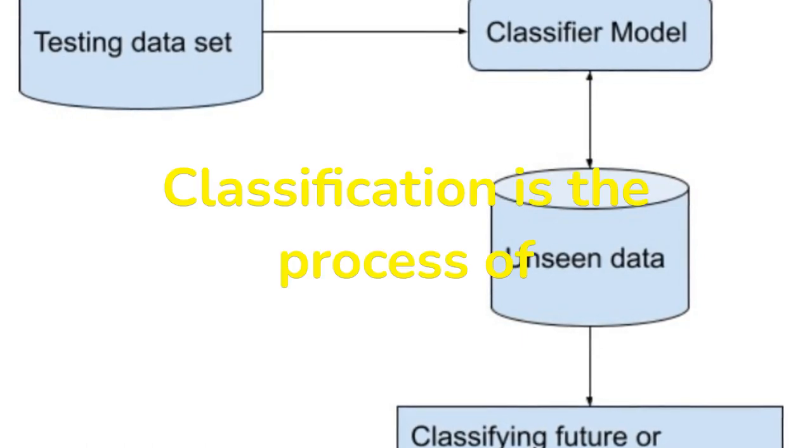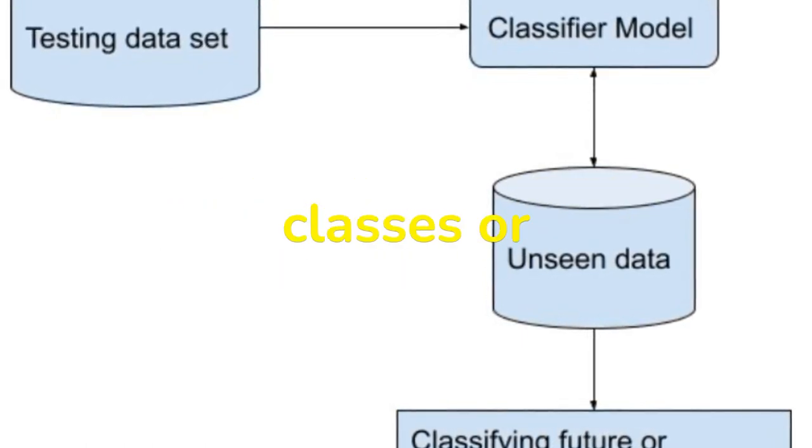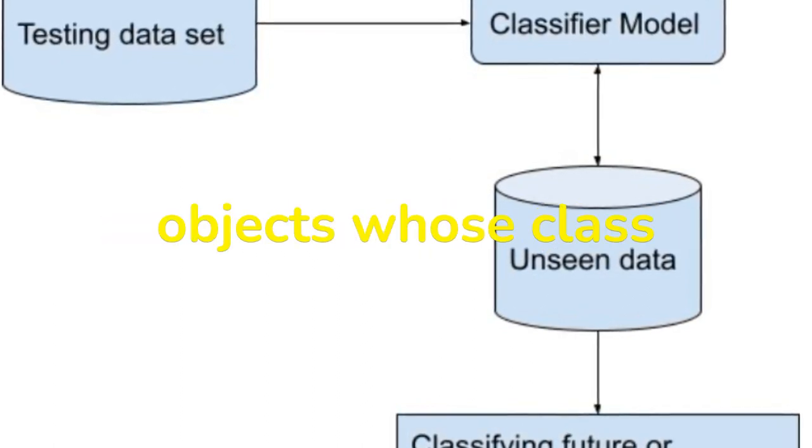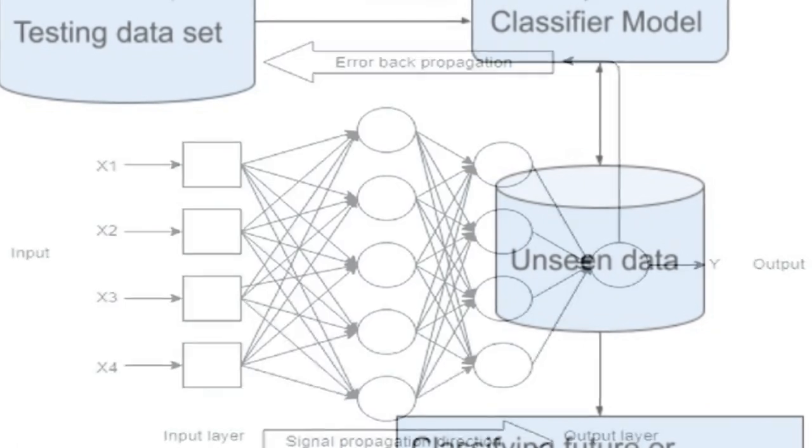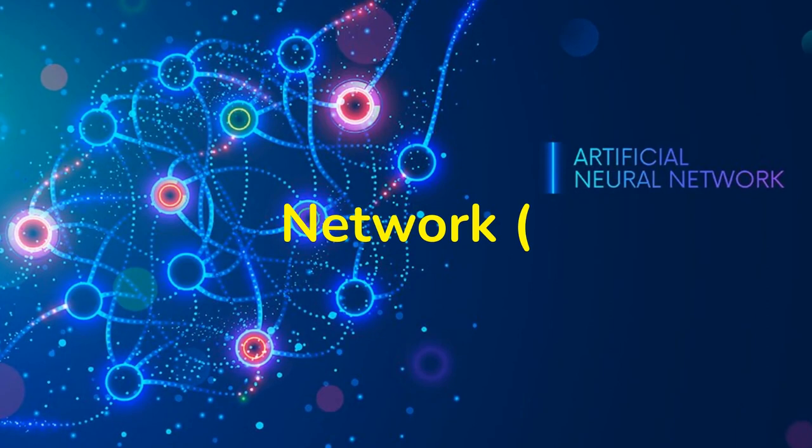Classification. Classification is the process of finding a model that describes and distinguishes data classes or concepts, to be able to use the model to predict the class of objects whose class label is unknown. Backpropagation, KNN, Artificial neural network (ANN).